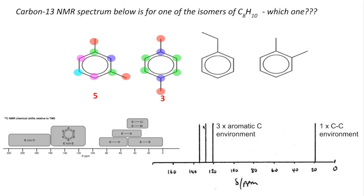For completeness, the third isomer — which we'd already ruled out for having two carbon-to-carbon environments — has two separate C–C environments (red and orange), plus four distinct sets of equivalent aromatic carbons (blue, and three further groups), giving six environments in total and four aromatic environments. So it doesn't match either.